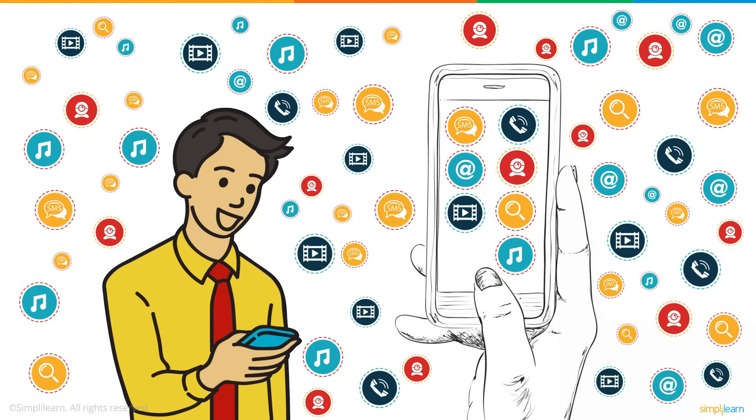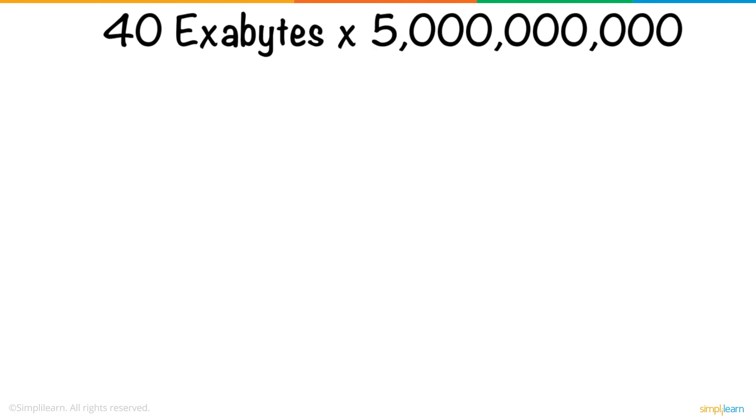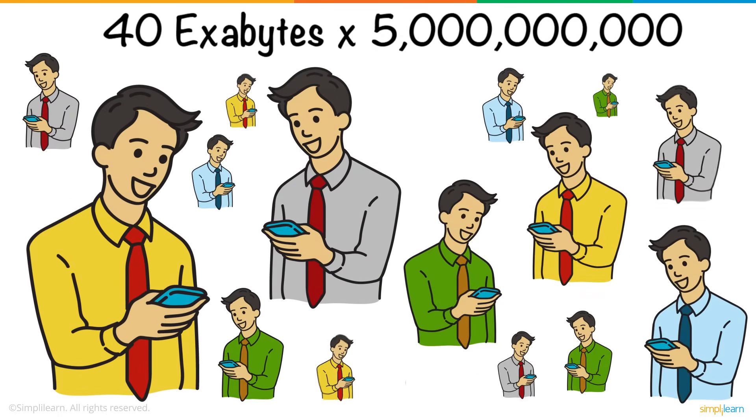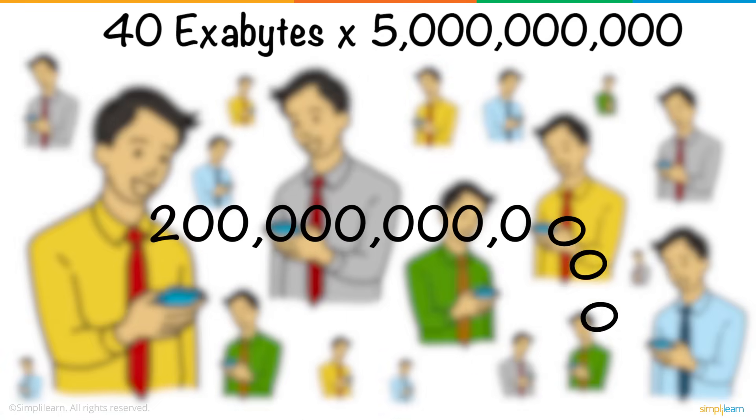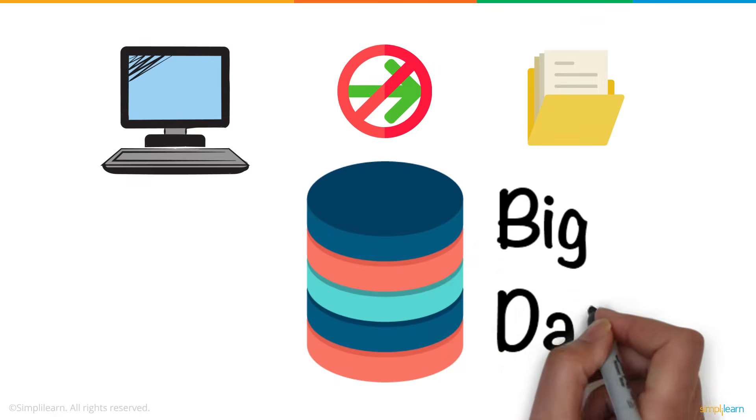Approximately 40 exabytes of data gets generated every month by a single smartphone user. Now imagine this number multiplied by 5 billion smartphone users. That's a lot for our mind to even process. In fact, this amount of data is quite a lot for traditional computing systems to handle, and this massive amount of data is what we term as big data.